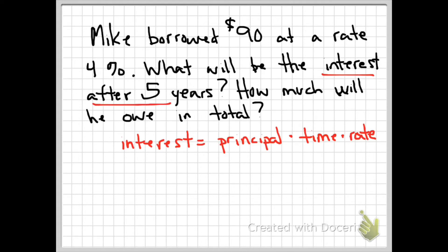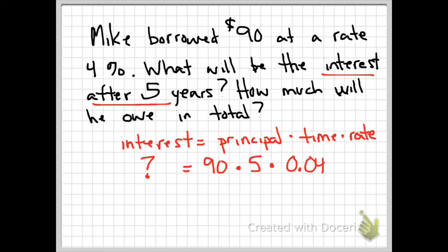We're solving for Interest, so that's our unknown. The principal — what Mike initially borrowed — was $90. He's doing this over the course of five years at four percent. Remember, we don't want to use four percent; we want to use 0.04.